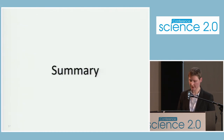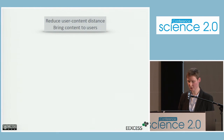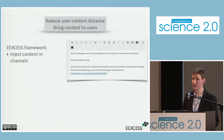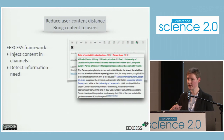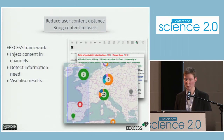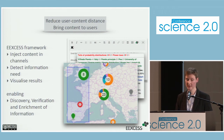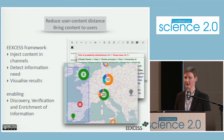Let me give a brief summary. The aim was to reduce the user-content distance by bringing content to the user. The highly modularized EXS framework allows injecting content in different channels — remember the WordPress plugin. It detects the information need to present personalized results and presents them in a pleasant way. What we gain by doing so is enabling discovery of new information as well as enrichment and verification of existing information. I started this talk with a question, and I would like to end with a question.